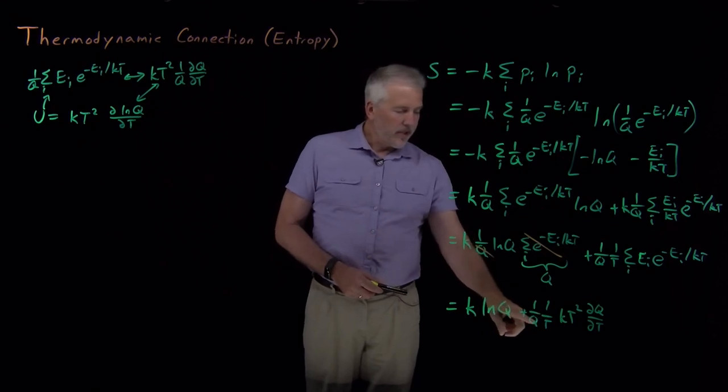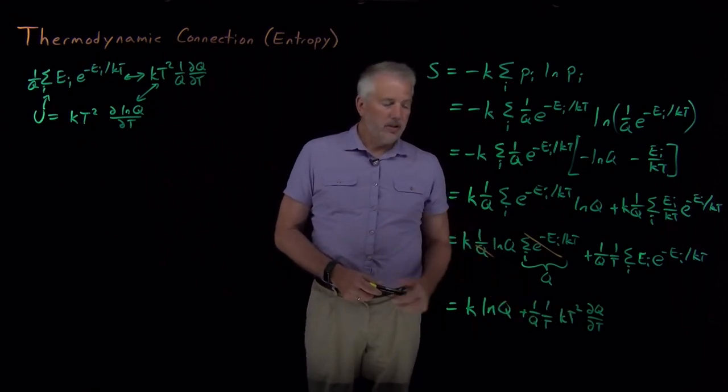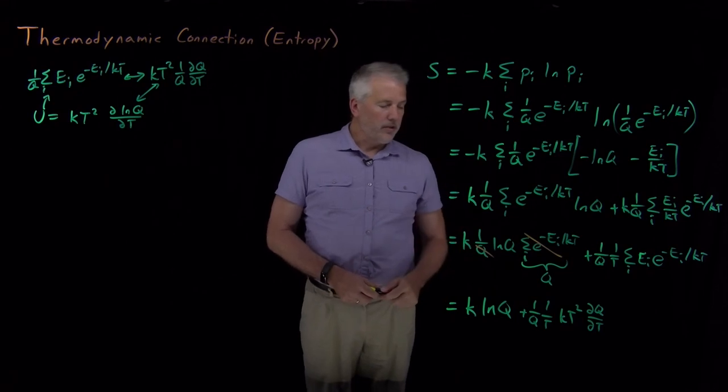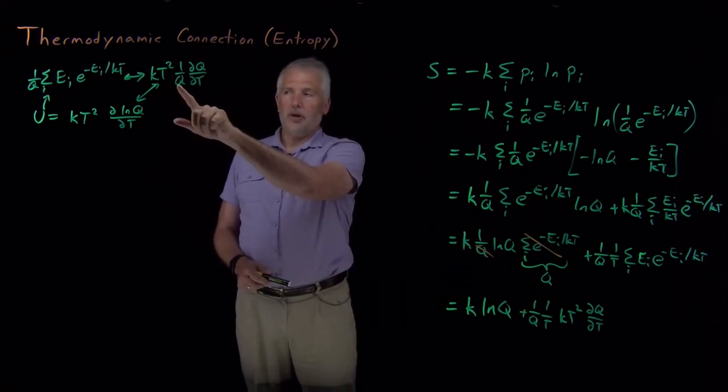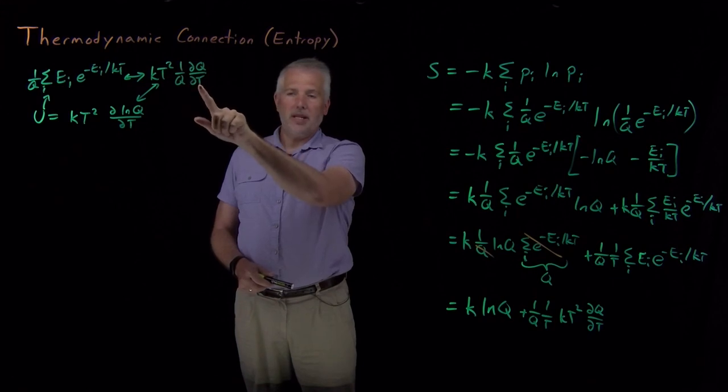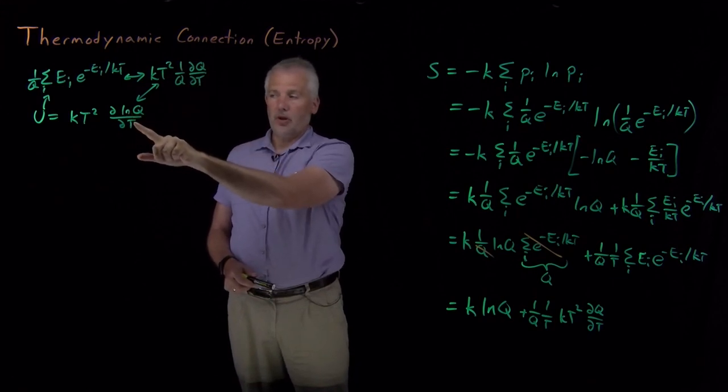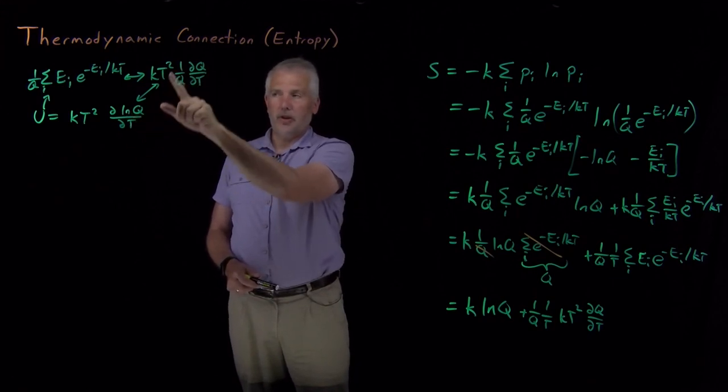One last bit of cancellation. I have a t in the denominator, t squared in the numerator, so that one of those factors of t cancels. And also, again, just as before, we have a 1 over q dq dt that we ended up rewriting as the derivative of log q dt. The derivative of log is 1 over.